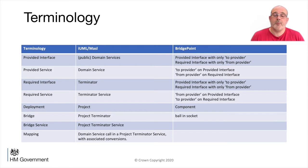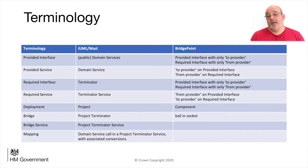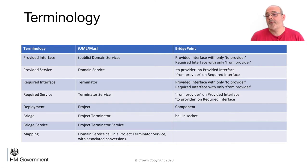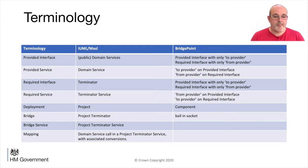In Bridgepoint terminology, a bridge would be a ball attached to a socket. When I talk about a mapping, that's effectively, in MASL terms, a domain service call inside a project terminator service with any associated conversion - the thing that's actually doing the conversion from one domain's language to the other. Most of the time today I'm going to be concentrating on the mappings. I may slip up and call them interfaces or bridges, but I pretty much always mean a mapping.